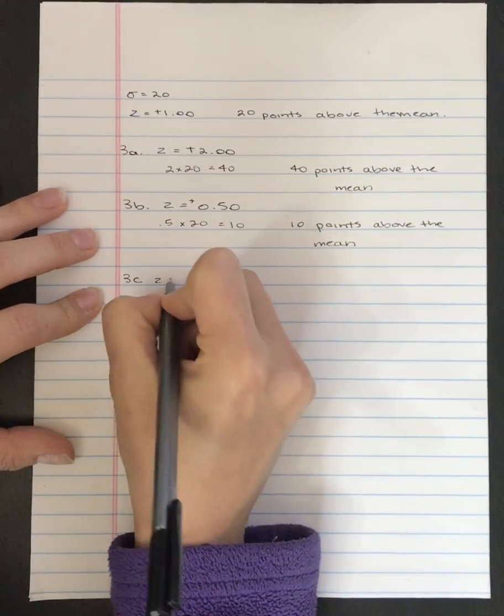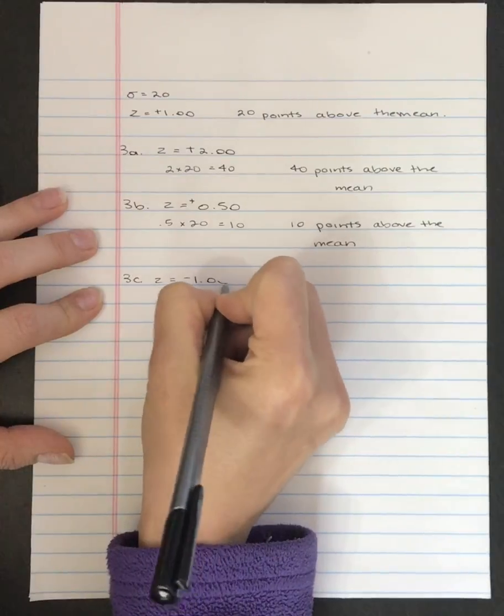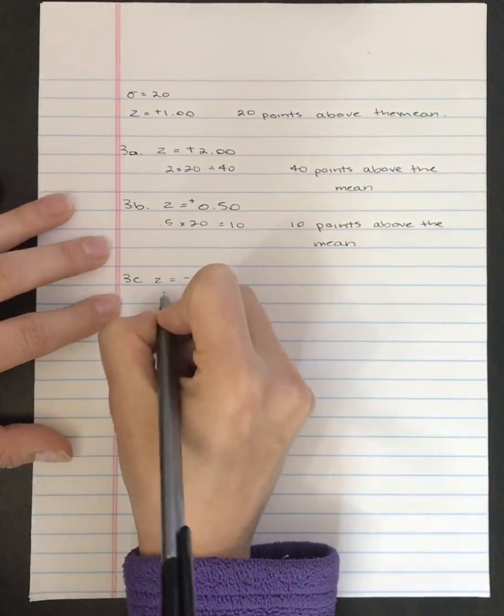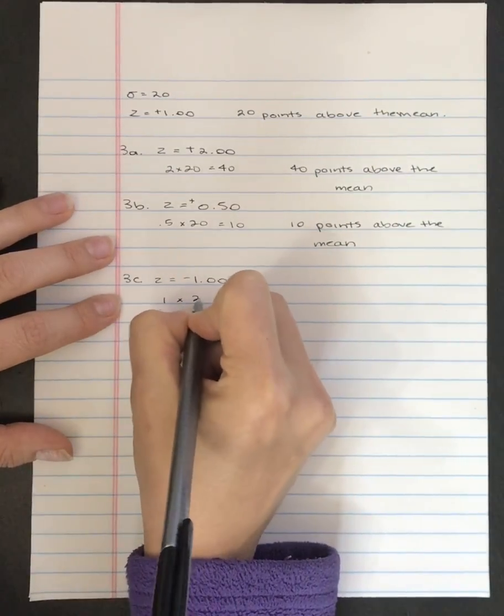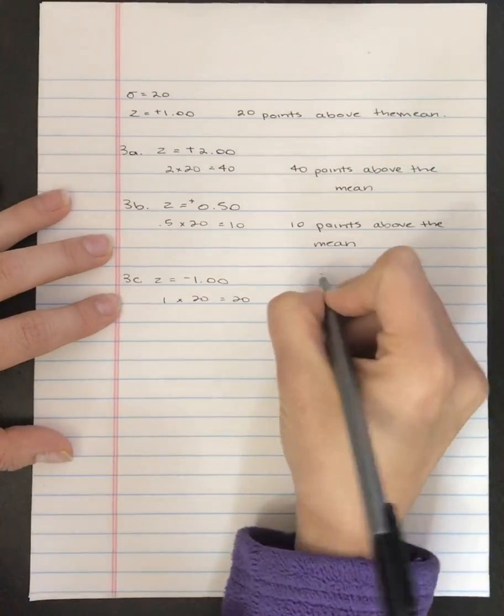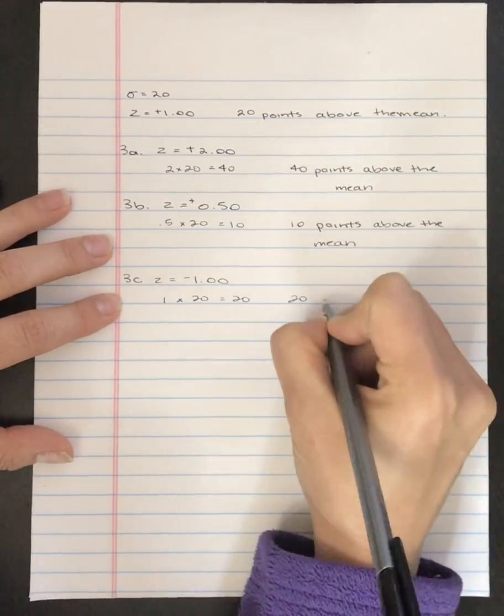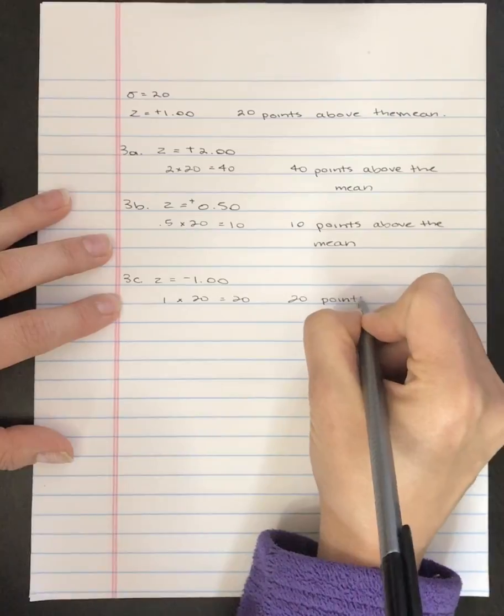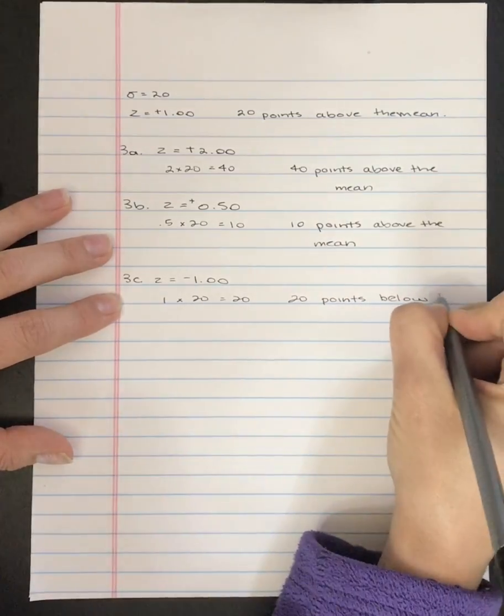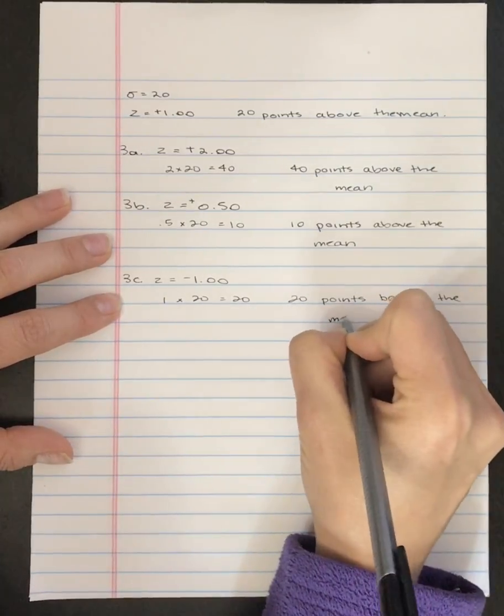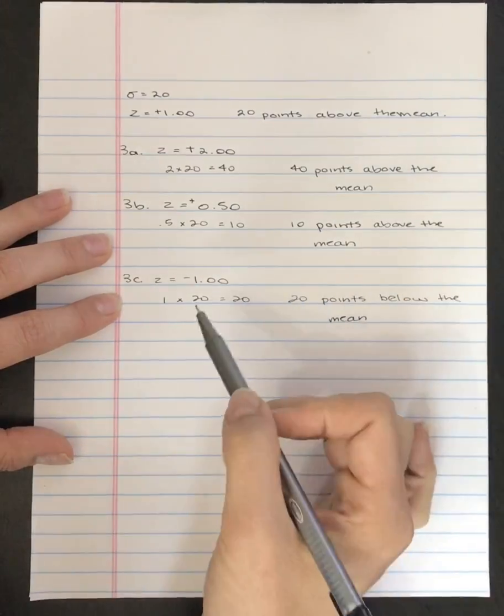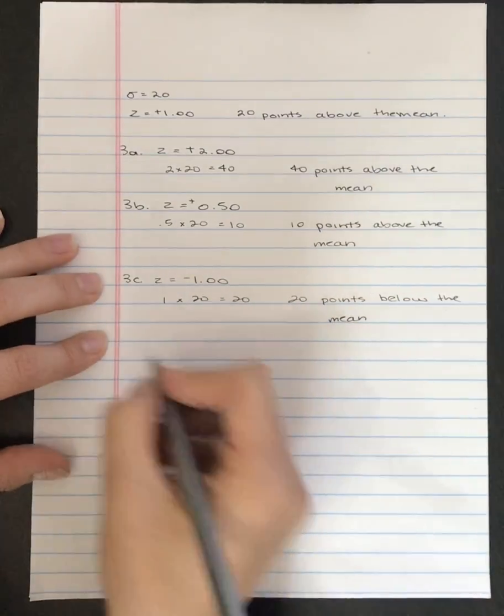3c is z-score of equal to negative 1.00. So if we take 1 times 20, we get 20. And so this score is 20 points below the mean. And this time, it's below because it's a negative z-score.